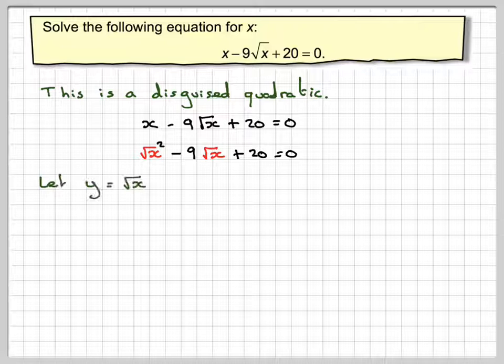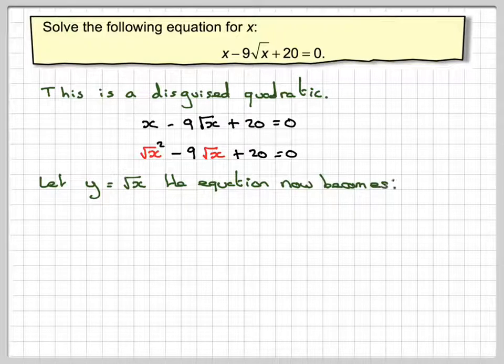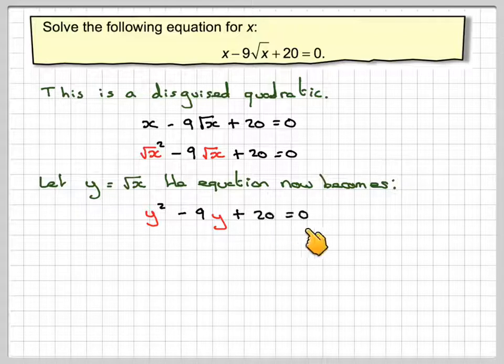Then we introduce our dummy variable. So let y be equal to square root of x. So that will now become y squared minus 9 times y plus 20 is equal to 0. So again, we can see that this is a disguised quadratic.